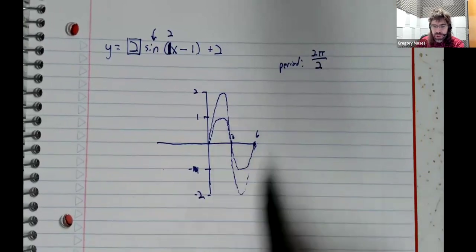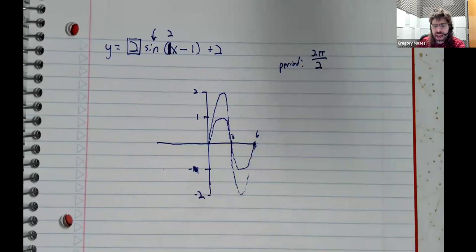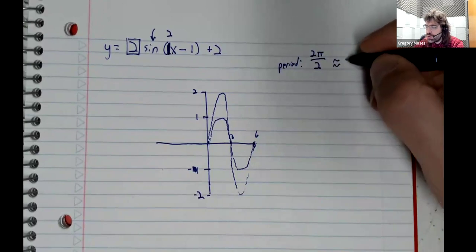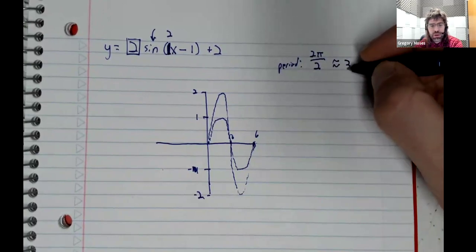Our period will be two pi divided by two. Well, since we're just doing a rough sketch by hand, two pi is about six. So two pi over two is about three.